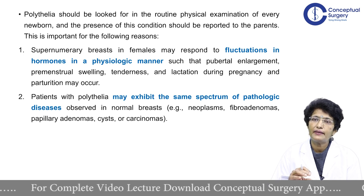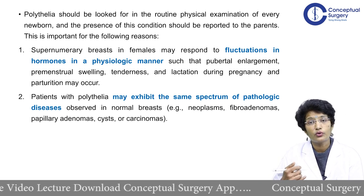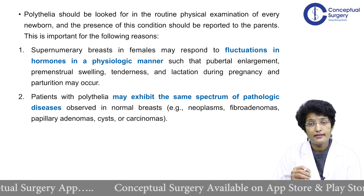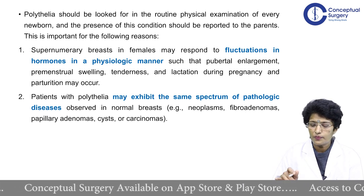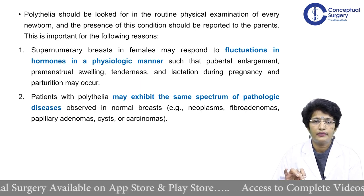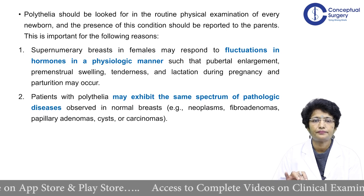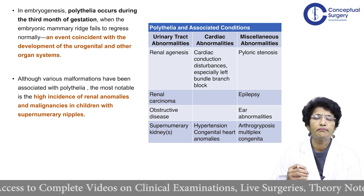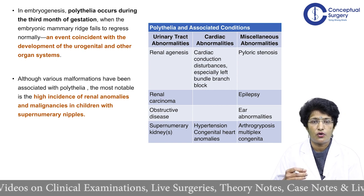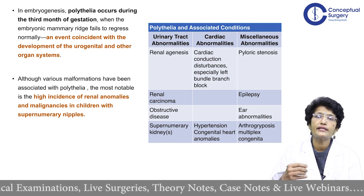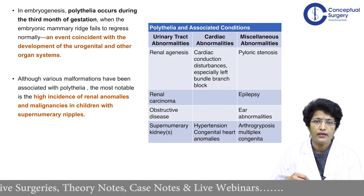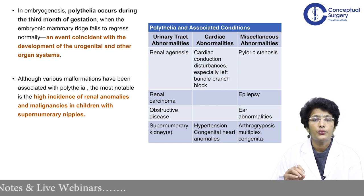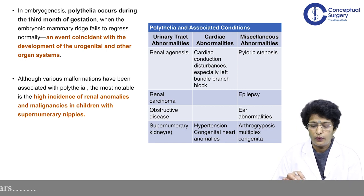Patients with polythelia may exhibit the same spectrum of pathological diseases — breast cancer can develop in an accessory breast, and fibroadenomas and cysts can also be seen. Polythelia occurs in the third month of gestation when the mammary ridge fails to regress normally, coinciding with development of urogenital and other organ systems. Polythelia may be associated with urological malformations or urogenital malignancies, and the highest incidence is that of renal anomalies and malignancies in children with supernumerary nipples. Therefore, polythelia should always be looked for during routine physical examination of a newborn, and parents should be notified.